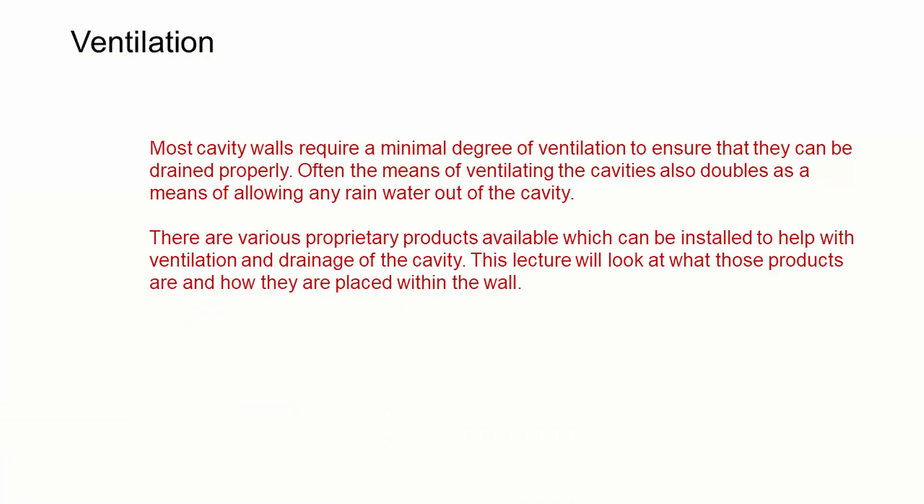From previous lectures we know that when we create a double skin blockwork or brickwork wall, we're creating a space between the two leaves of masonry. That space has specific functions — it helps with sound and thermal performance, but it also helps protect the building from weather, and as part of that we need to be able to ventilate the cavity.